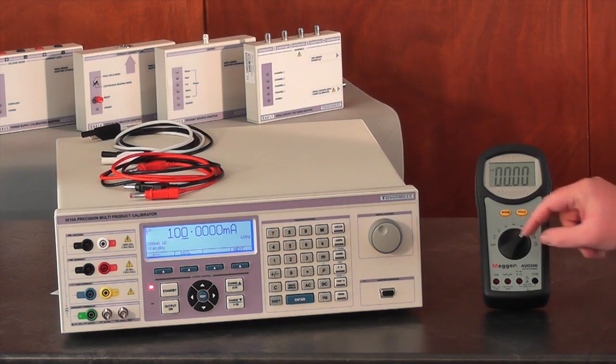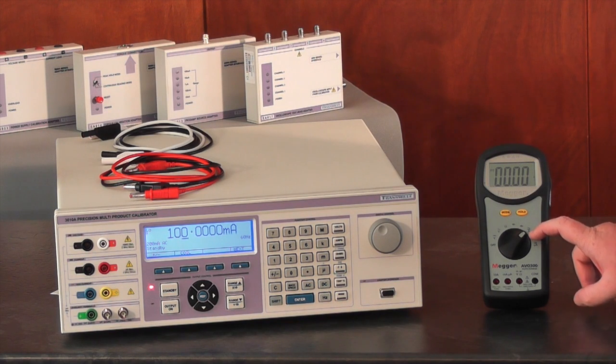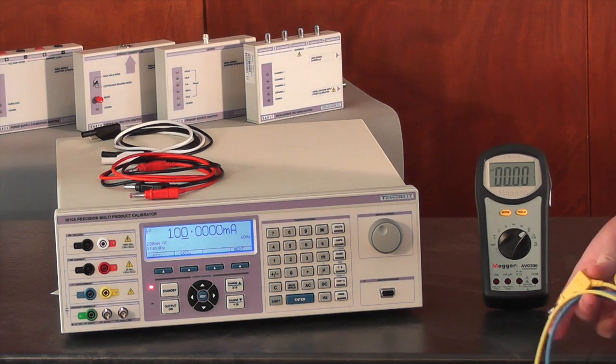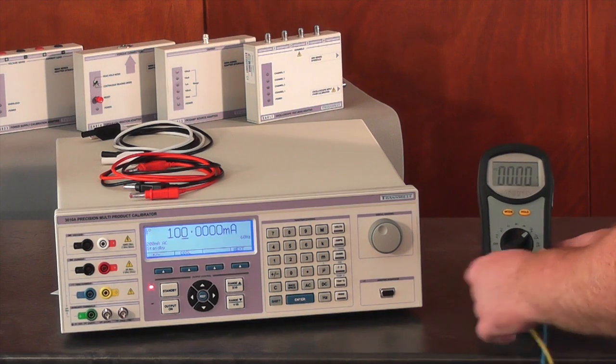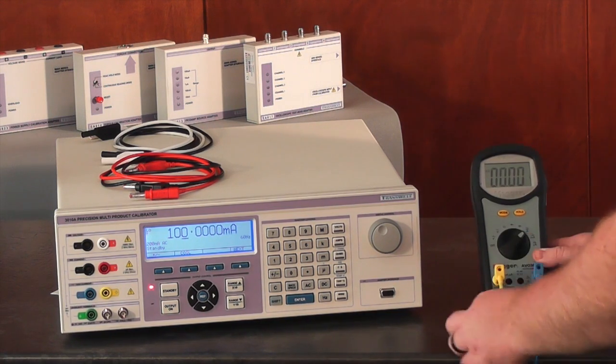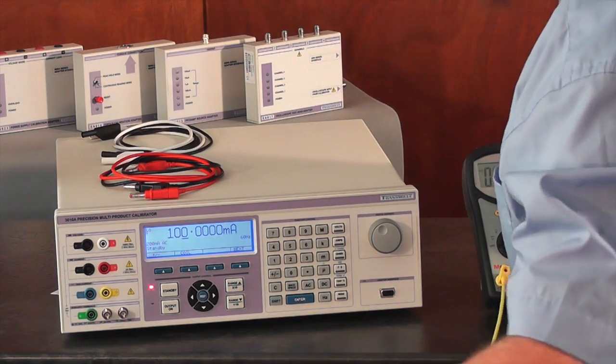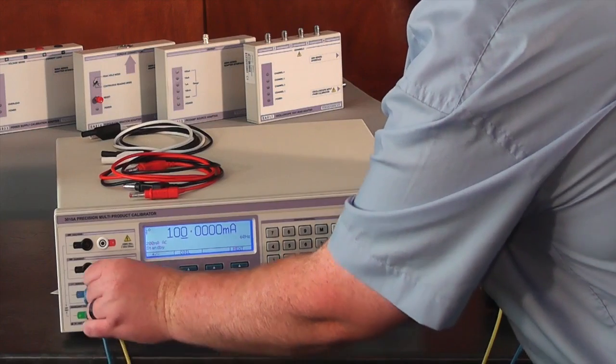Switching to high current measurement mode on this multimeter requires changing the leads to the 3000 series calibrator. This is for protection of the UUT to avoid damaging the 400 milliamp fuse in this multimeter. We will now connect between the common and 10 amp inputs of the multimeter to the high current terminals of the 3000A using the color-coded leads set.